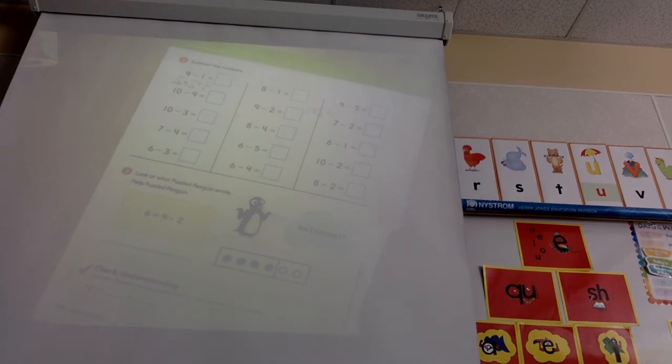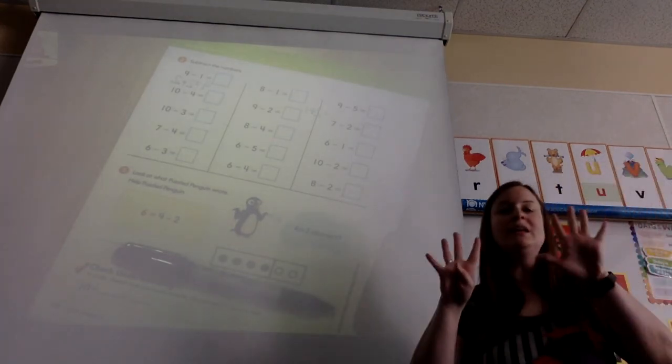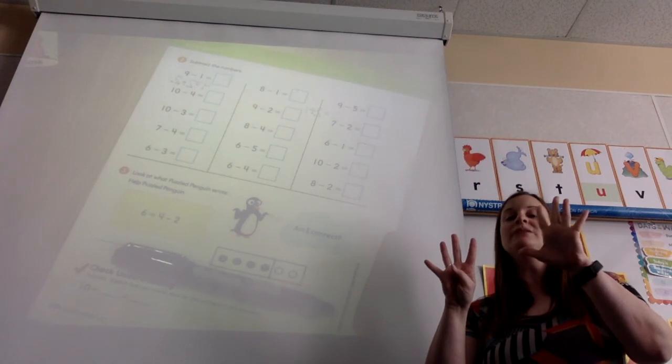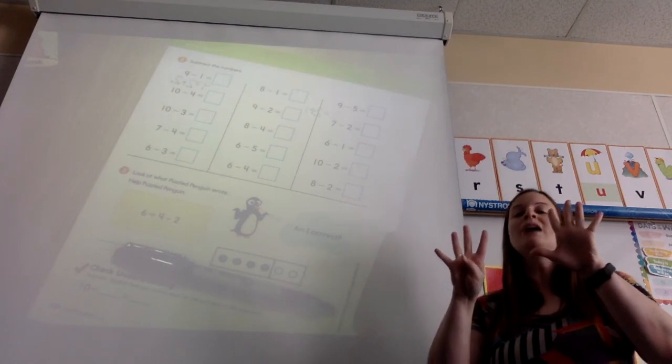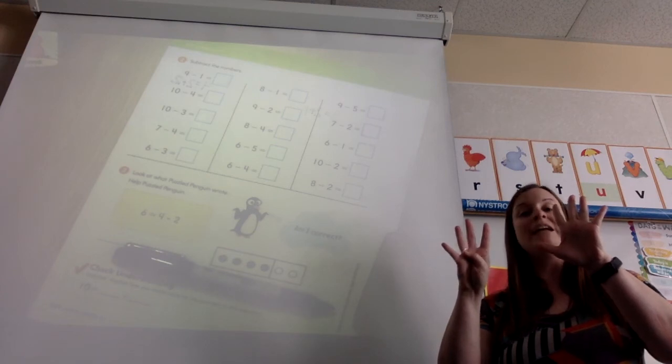And then you can use those crayons and put away however many it tells you and that will give you the answer. So for this first one, let me see if I can come over there, I'm just going to put nine fingers up. And I can put nine fingers up easily because I know that one finger less than 10 is nine.